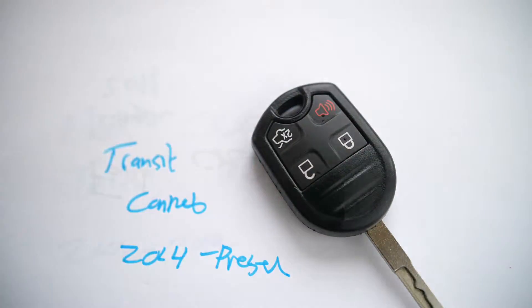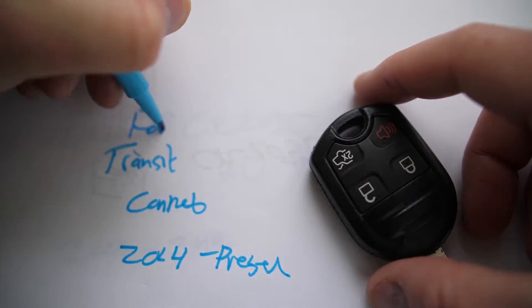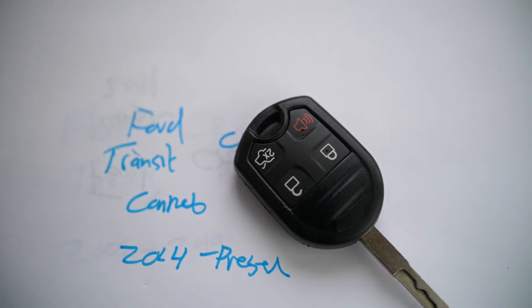Go ahead and put this back on, snap everything back together. That's it. So that's how you replace the key fob battery for the Ford Transit Connect. And again, the battery is a CR2032 3-volt battery.